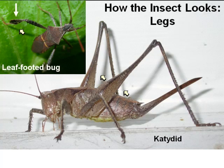Back to my leaf-footed bug: the expansion on the leg actually helps you identify this as a leaf-footed bug, because there are some insects that look similar — for example, some predatory Reduviidae — but they do not have the expanded leg, and that's one of the ways you tell the difference.